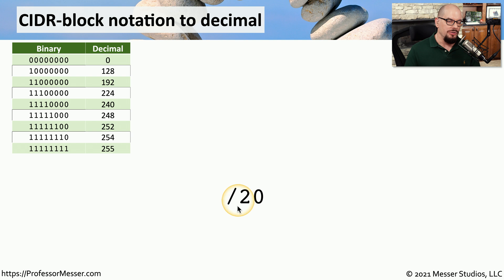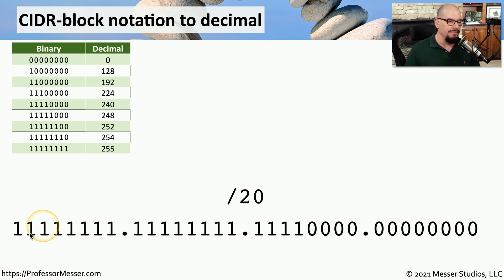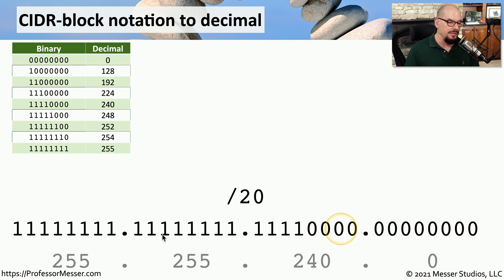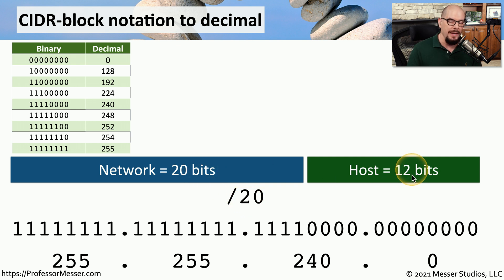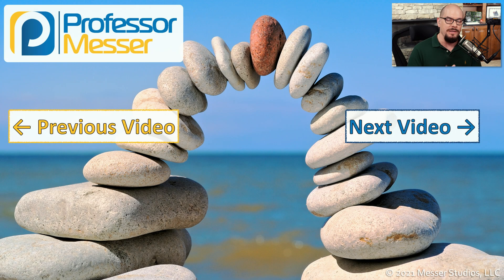Let's do one more reverse calculation with a slash 20 subnet mask. Writing out those 20 ones in binary, the first two octets are all 1s. The third octet is 1, 1, 1, 1, 0, 0, 0, 0, and the last octet is all 0s. Performing the conversion from binary to decimal, the slash 20 subnet mask is 255.255.240.0, with 20 network bits and 12 remaining host bits. Being able to perform these calculations quickly will help you during subnetting questions, so try taking different slash values or binary values and practice converting them to decimal form and back.